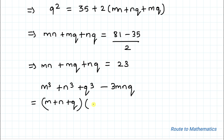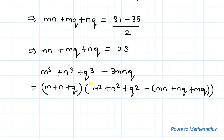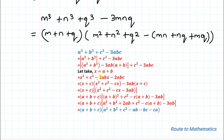A lot of you must know how this expression M cubed plus N cubed plus Q cubed minus 3MNQ is derived. For those who don't, I'm just giving the derivation here. I am not explaining each step as it is a bit easy to understand — you can simply pause the video and look at the steps and you can easily understand how this expression is derived.